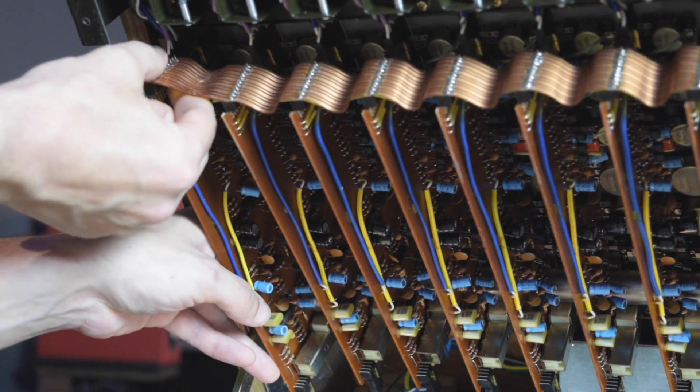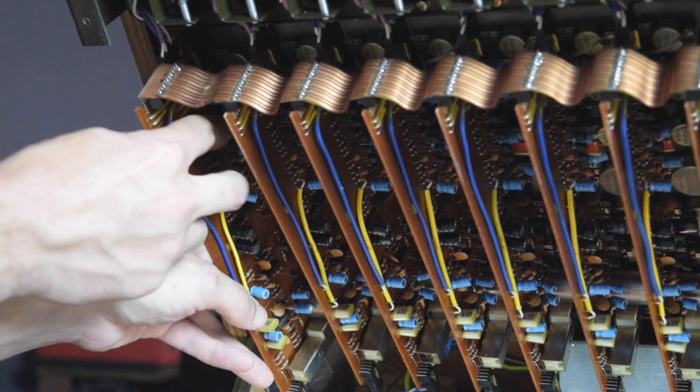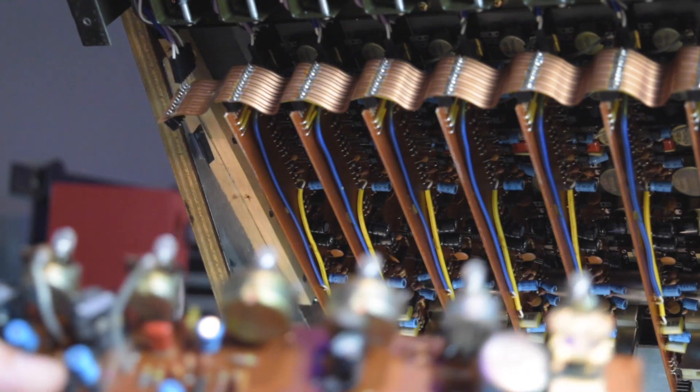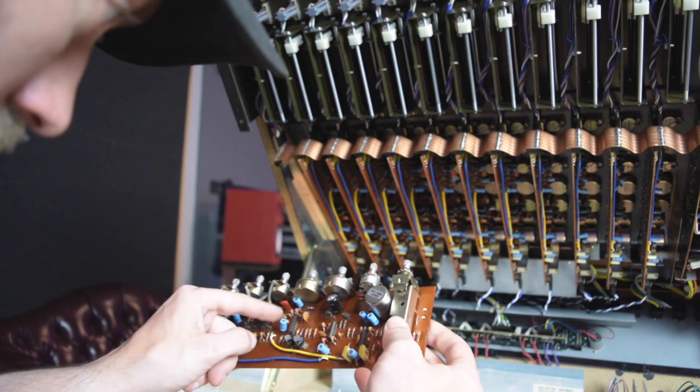Let's take a look at the install in the Japanese console. First thing we got to do is take the channel strip out so we can get to the ICs to desolder the old op-amps.